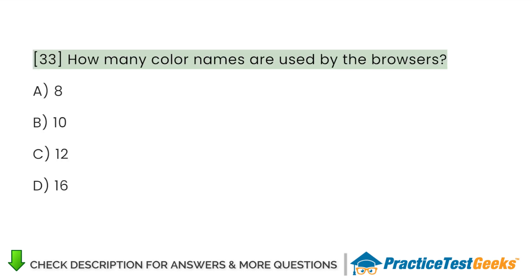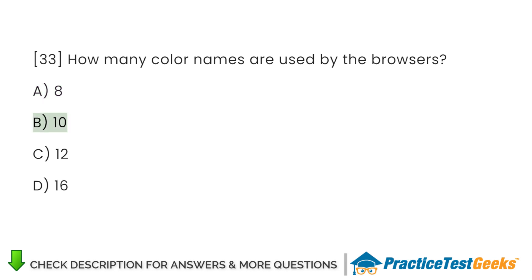How many color names are used by browsers? A. 8. B. 10. C. 12. D. 16.